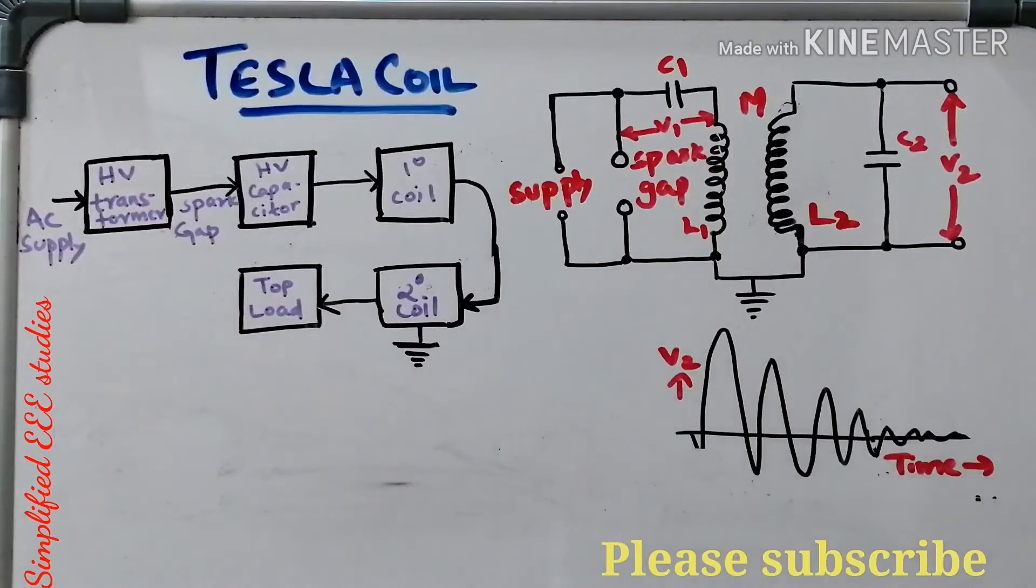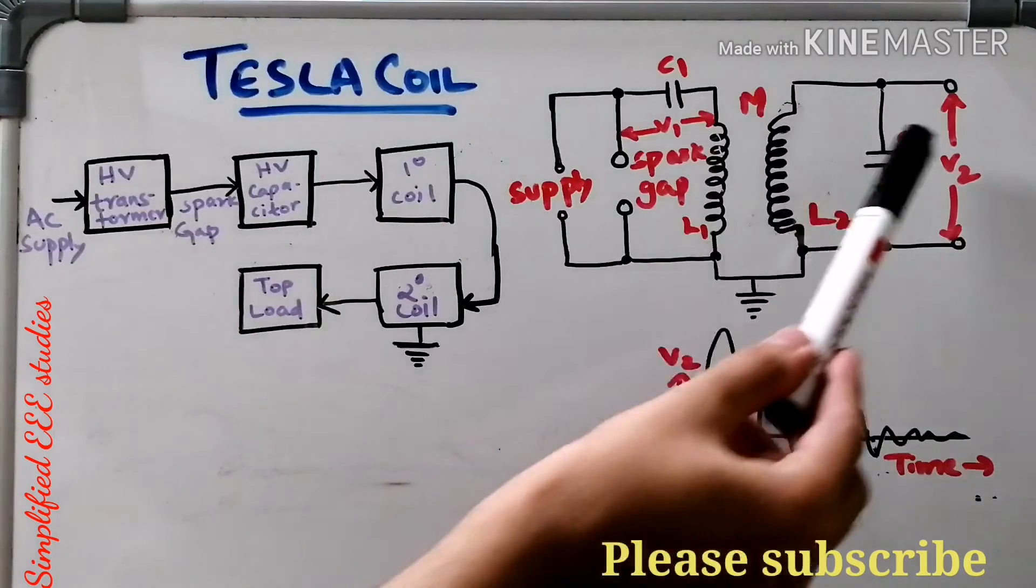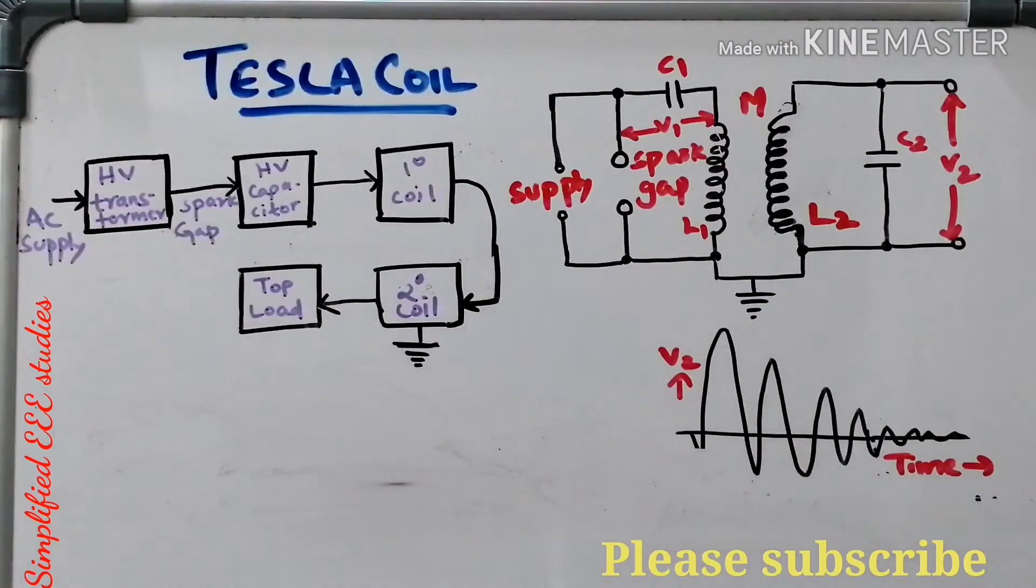The duty of C2. The first function is filtration. That means some amount of ripple content will be there that will be filtered out with the help of C2. Other duty, it will also act as a parallel resonance. L2 C2 combination that will act as a parallel resonance circuit.